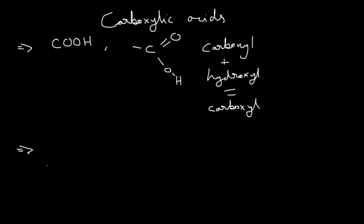Carboxylic acids always have a boiling point higher than alcohols, alkanes, alkenes, and alkynes. This is because of something called a dimer structure. Because of the dimer structure, carboxylic acids have the highest boiling point of all these organic compound types — this will be discussed in more detail in the organic chemistry reactions chapter.